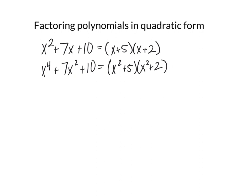If we multiply that out, x squared times x squared gives us x to the 4th. Then x squared times 2 is 2x squared, and 5 times x squared is 5x squared, so the middle term is 7x squared. You'll notice the first exponent is half the highest exponent — the middle exponent will always be half the leading exponent.